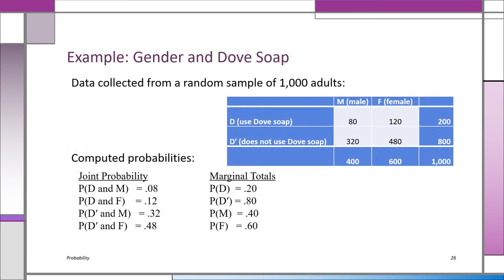Here's a very similar problem. We have a population of 1,000 individuals — male and female — and whether they use Dove soap or not. Over the 1,000 people: 200 use Dove soap, 800 do not; 400 are male, 600 are female; 480 of the females do not use Dove soap; and 80 males do use Dove soap. That's the data in the contingency table, and we can compute probabilities from it.